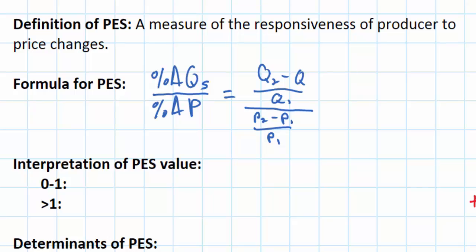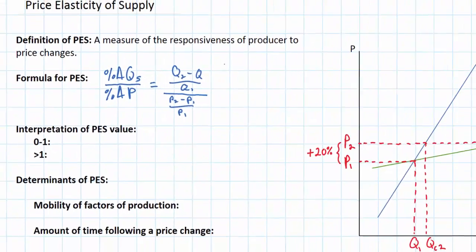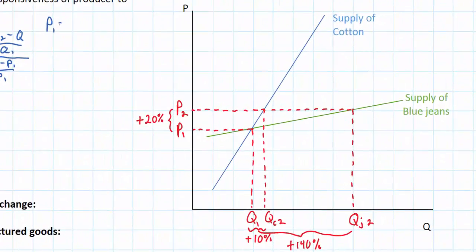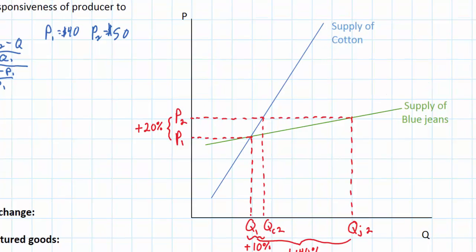Let's do a quick example. In our graph on the right, assume that P1 equals $40, P2 equals $50, and we'll look at the responsiveness of blue jeans producers to the change in price from P1 to P2. Assume that Q1 is 3,000 pairs of blue jeans and Q2 is 7,200. We can now calculate the price elasticity of supply for blue jeans between $40 and $50.